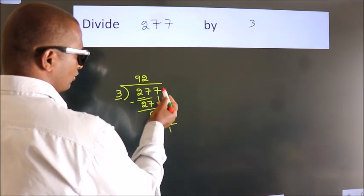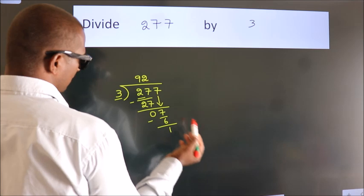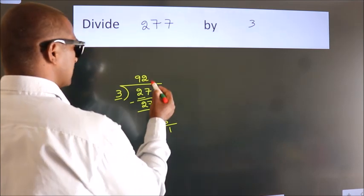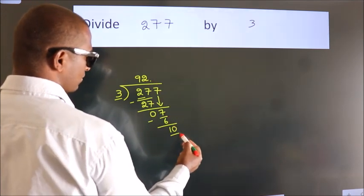After this, no more numbers to bring down. So what we do is we put a dot and take 0. So 10.